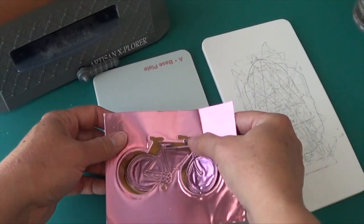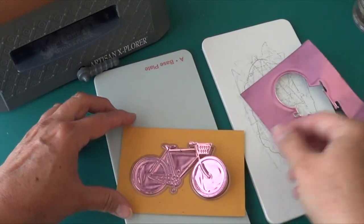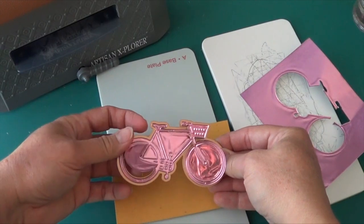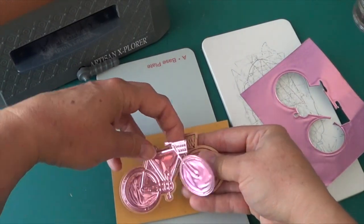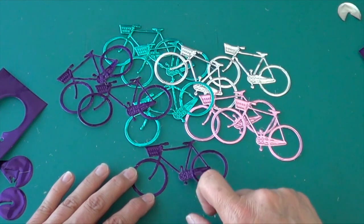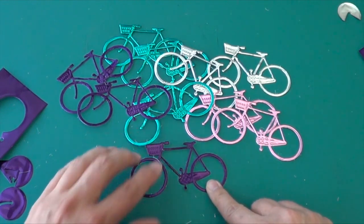Now take the bicycle off the die and pop out all the little spaces in between the wheels. I just think this bicycle was totally meant to be metallic, don't you think so? These are so cute with the little pedals and the basket on the handlebars.